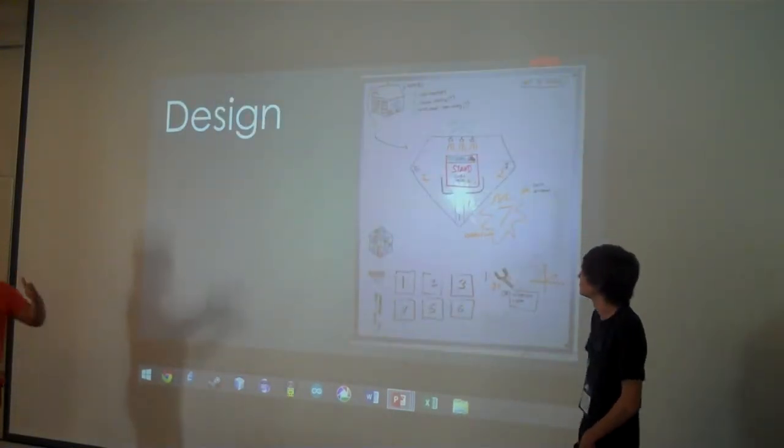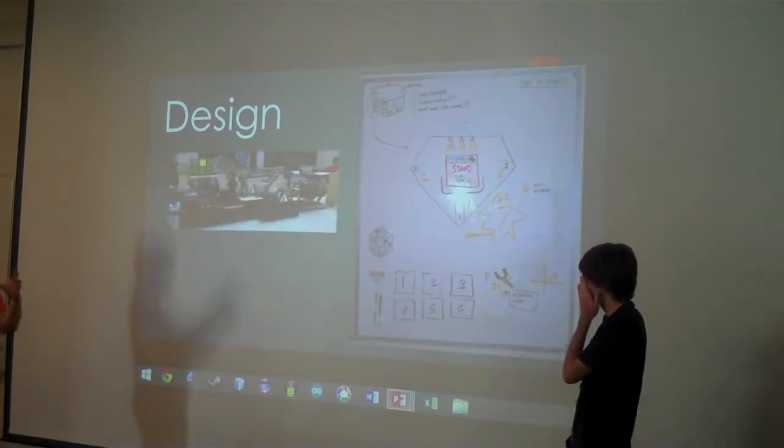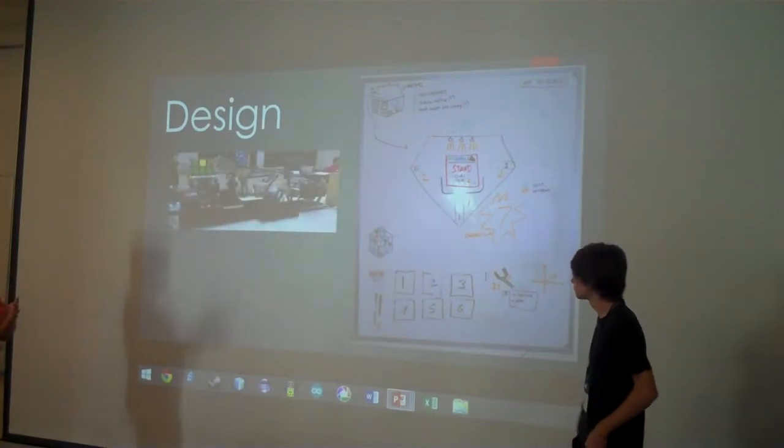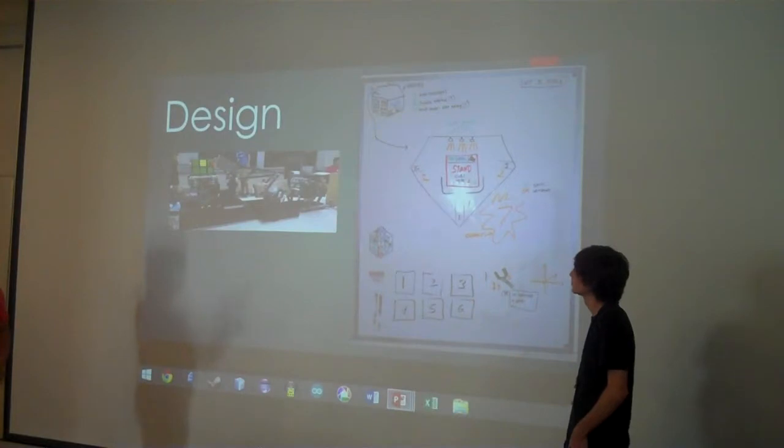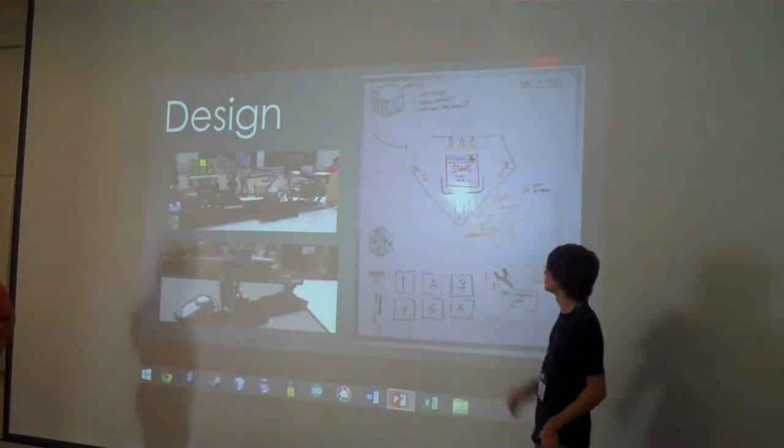Our first design was a pentagon shape with two arms and a crane thing that flipped the cube, but we didn't have enough motors and also light sensors on that side.